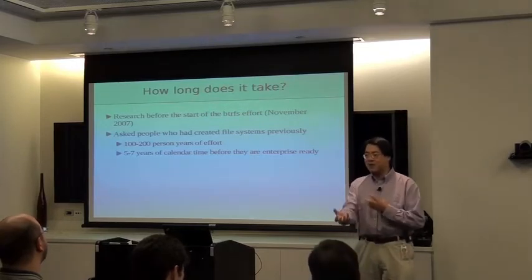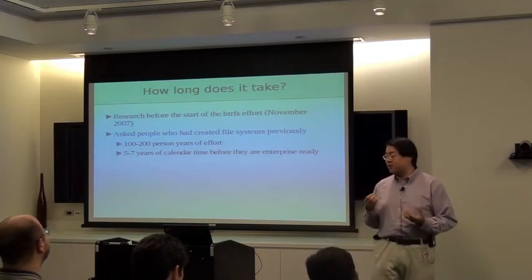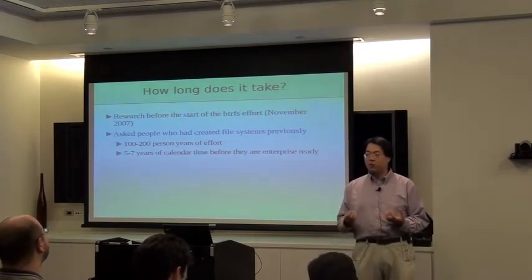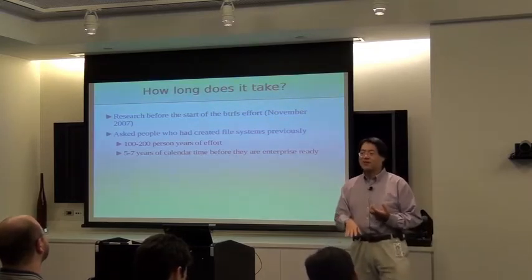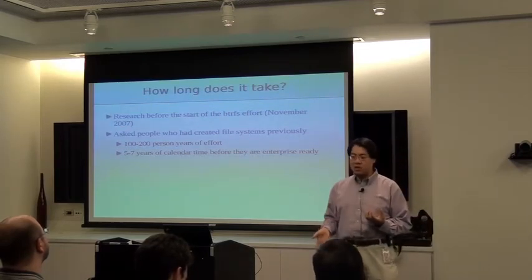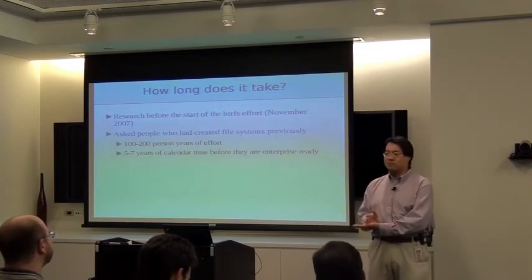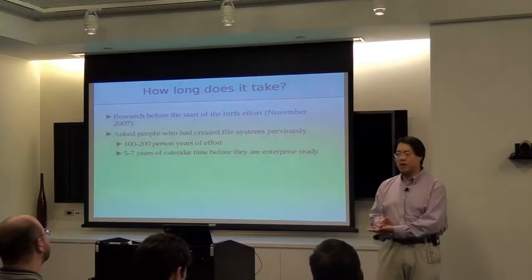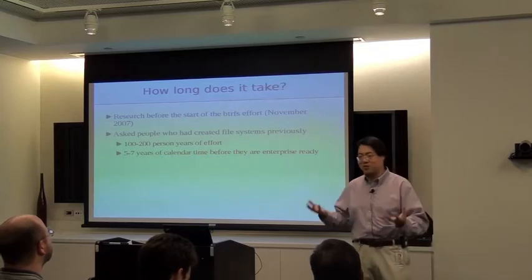Because of Brooks' Law, you can't just put 200 people on a project. It takes five to seven calendar years of real time before a file system is enterprise-ready — and some would say those are minimum numbers. Look at ZFS: it took seven years before it was announced by Sun, and nobody seriously used it in a mission-critical system for a couple of years after that. That's just kind of the reality — file systems are hard.